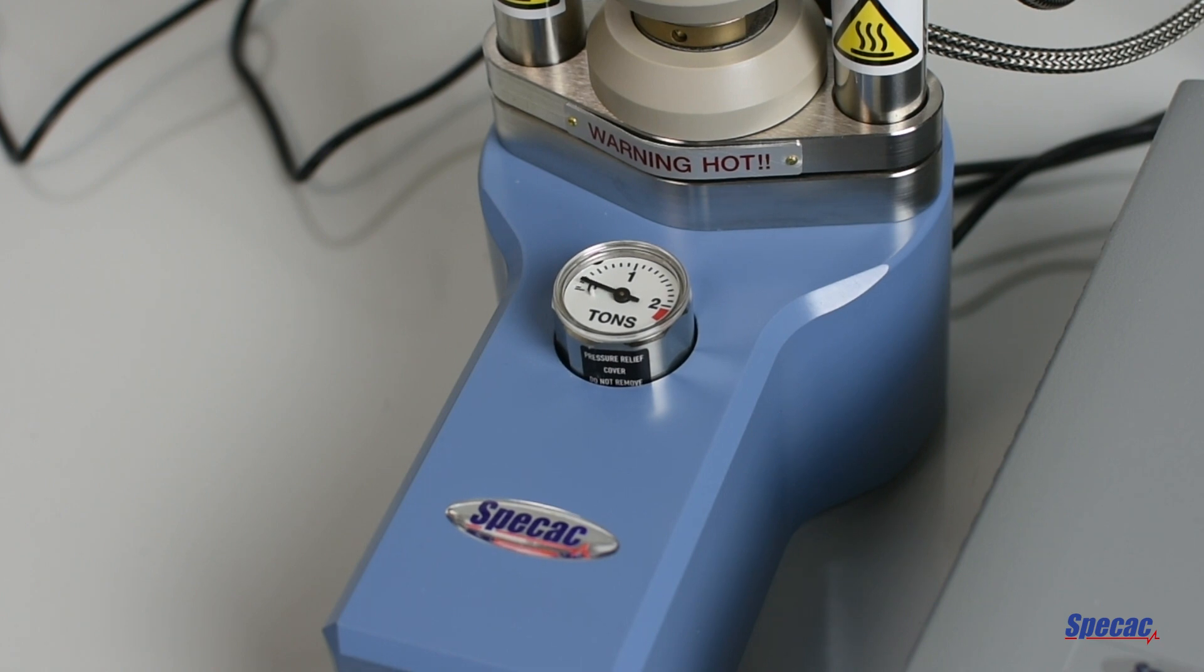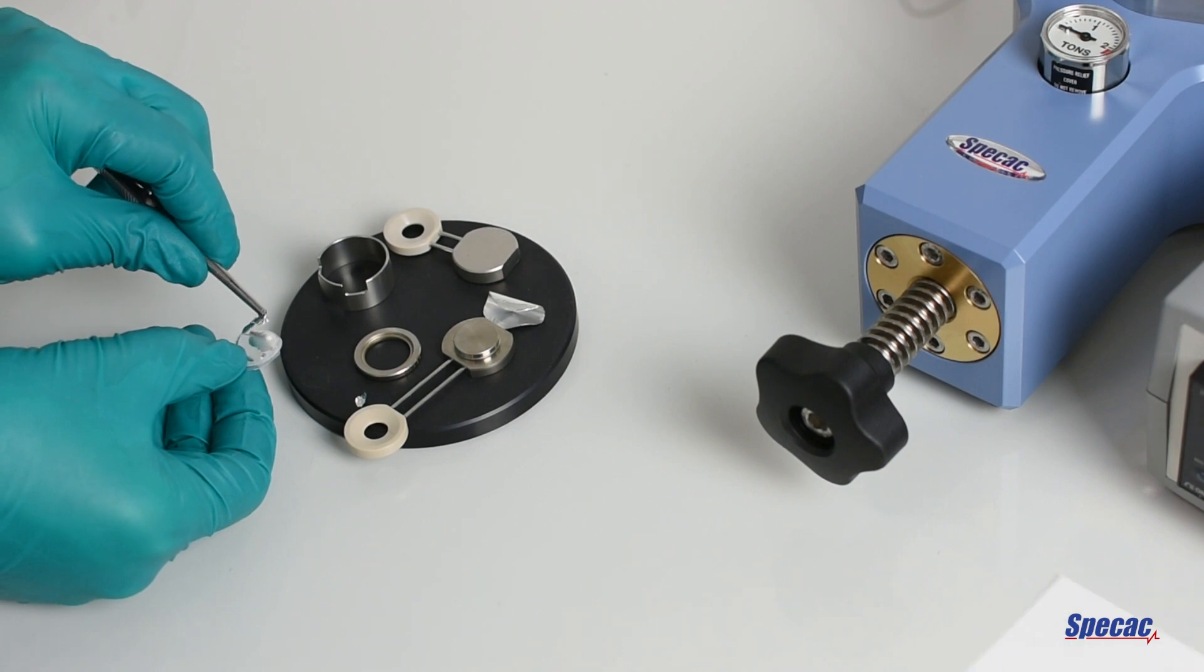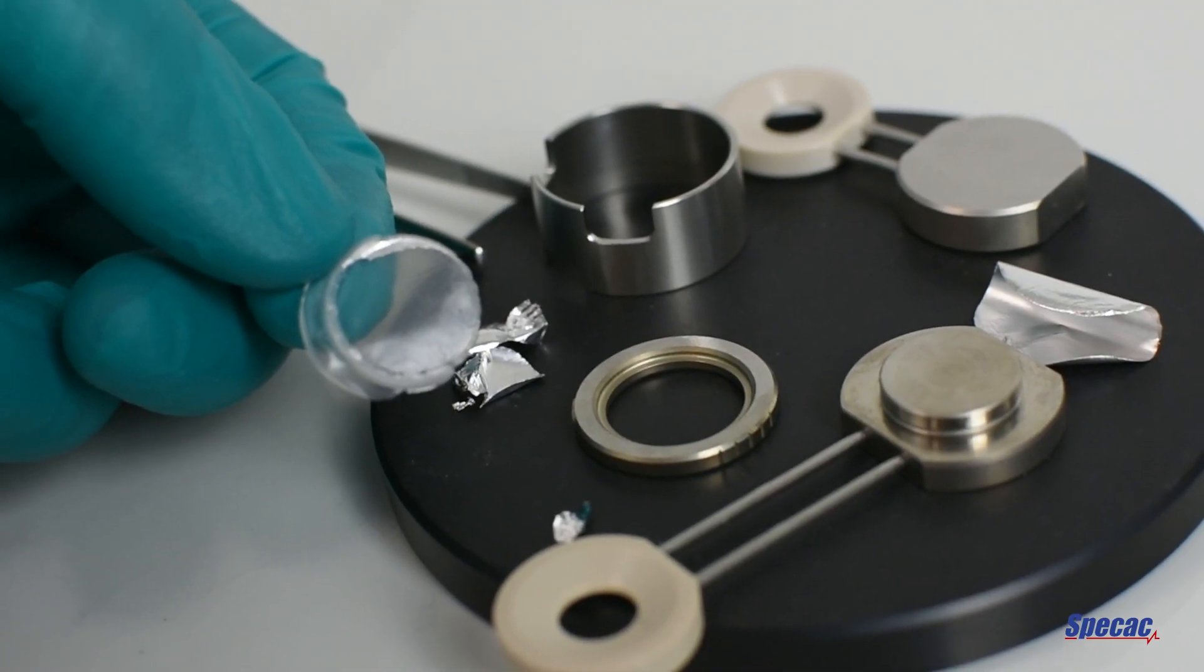This product video will show the production of a polymer thin film from a solid bead of low-density polyethylene which has a melting point of around 116 degrees centigrade.